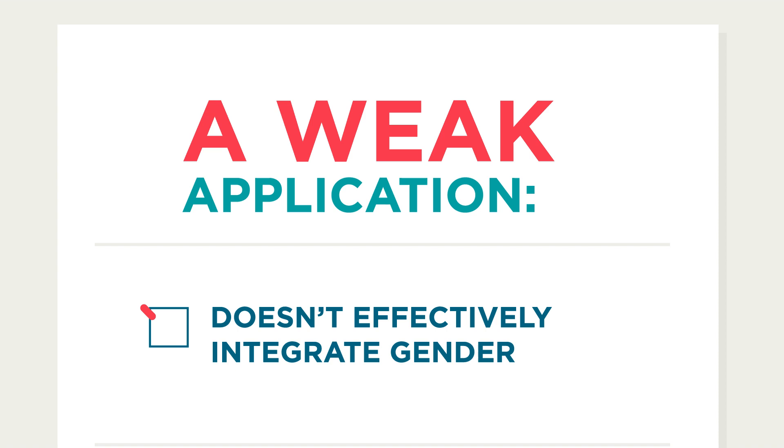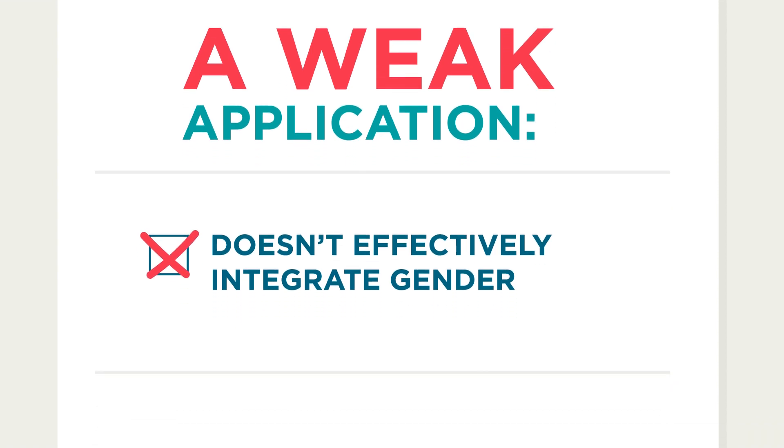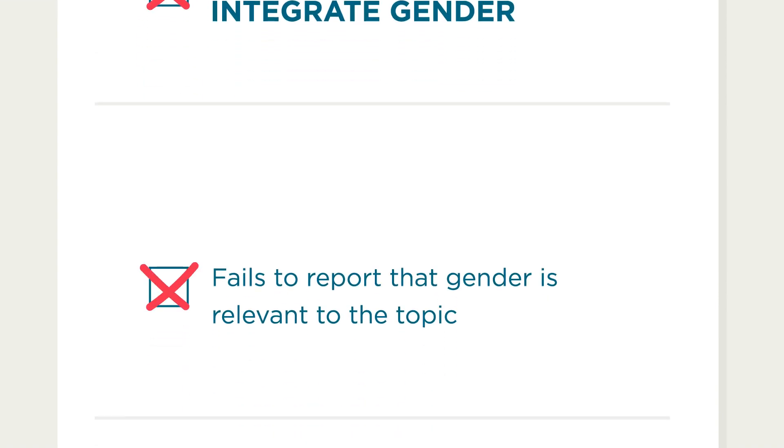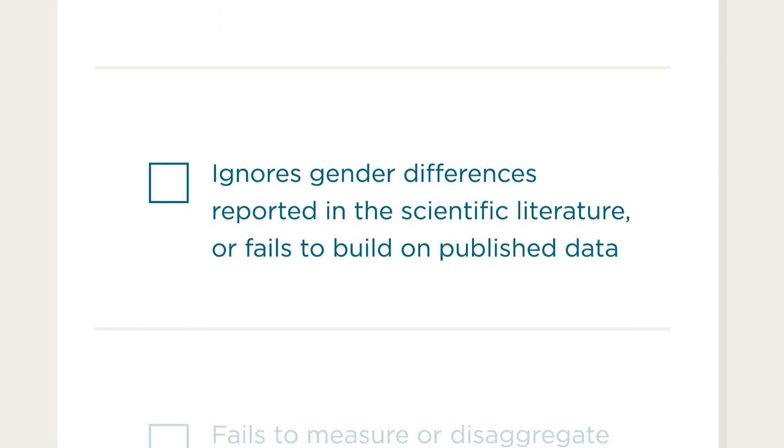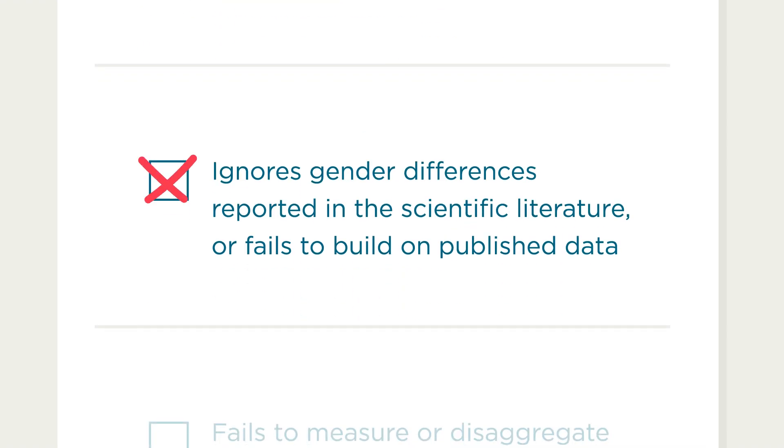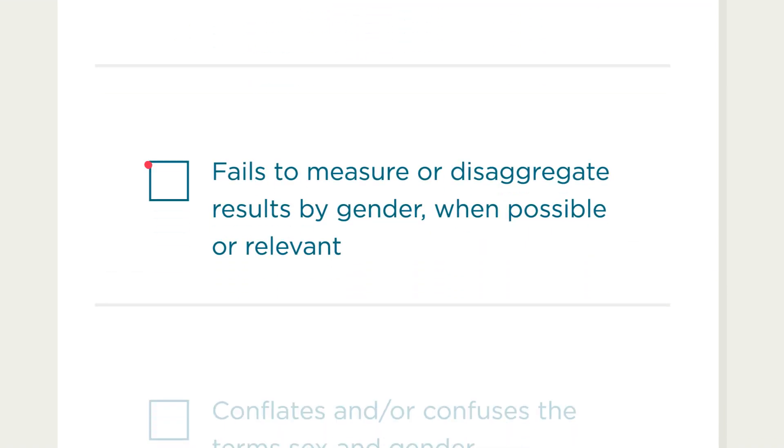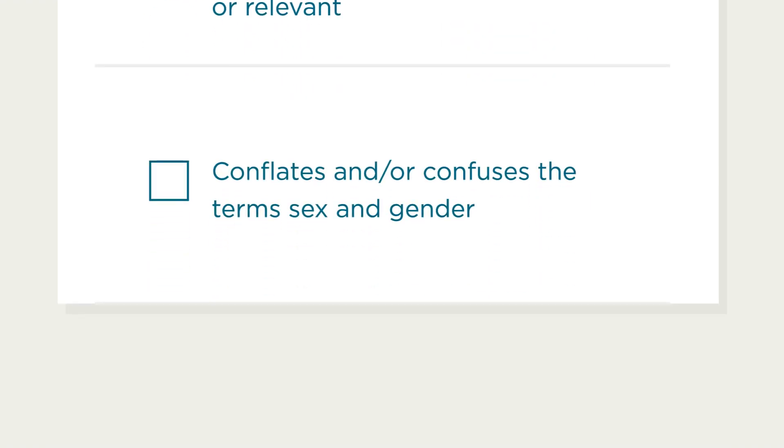A weak research proposal that does not effectively integrate gender fails to report that gender is relevant to the topic, ignores gender differences reported in the scientific literature or fails to build on published data, fails to measure or disaggregate results by gender when possible or relevant, and conflates or confuses the terms sex and gender.